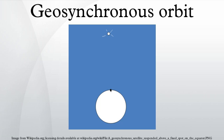Circular Earth geosynchronous orbits have a radius of 42,164 km. All Earth geosynchronous orbits, whether circular or elliptical, have the same semi-major axis. In fact, orbits with the same period always share the same semi-major axis, where A is the semi-major axis, P is the orbital period, and μ is the geocentric gravitational constant, equal to 398,600.4418 km³ per second².